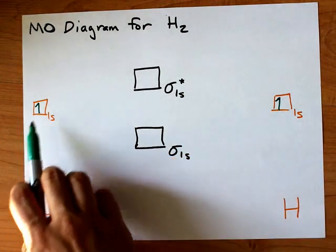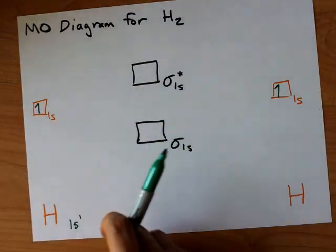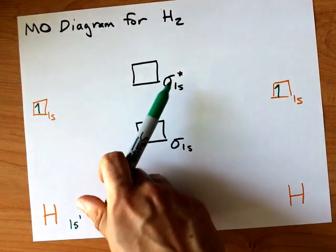The 1s atomic orbitals of the two hydrogen atoms overlap with each other to create a bonding and antibonding molecular orbital.